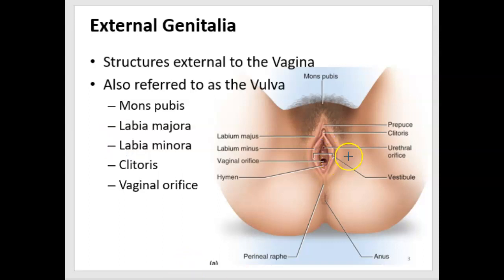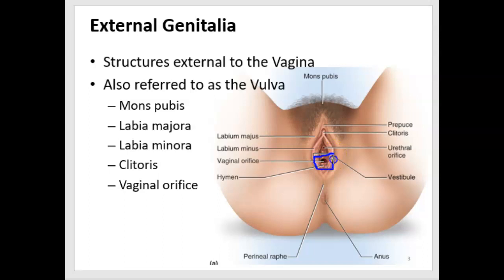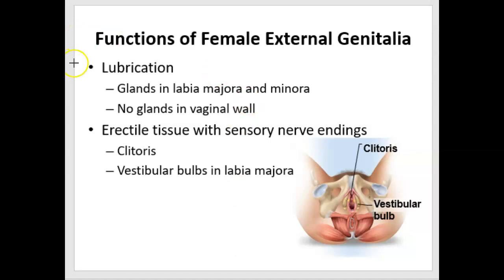The erectile tissue is anterior, just underneath the skin, headed toward the mons pubis — that's the clitoris. The opening to the vagina is between the opening to the urethra and the opening to the rectum, also known as the anus.